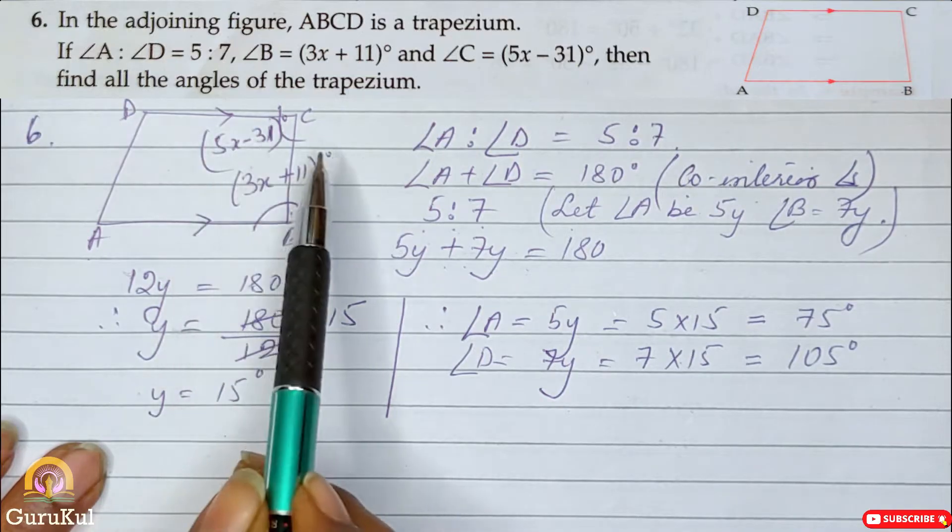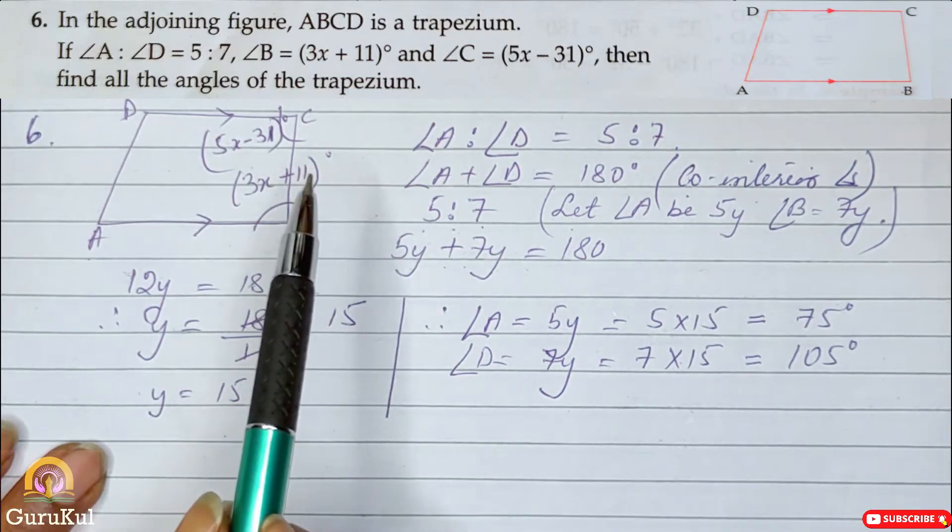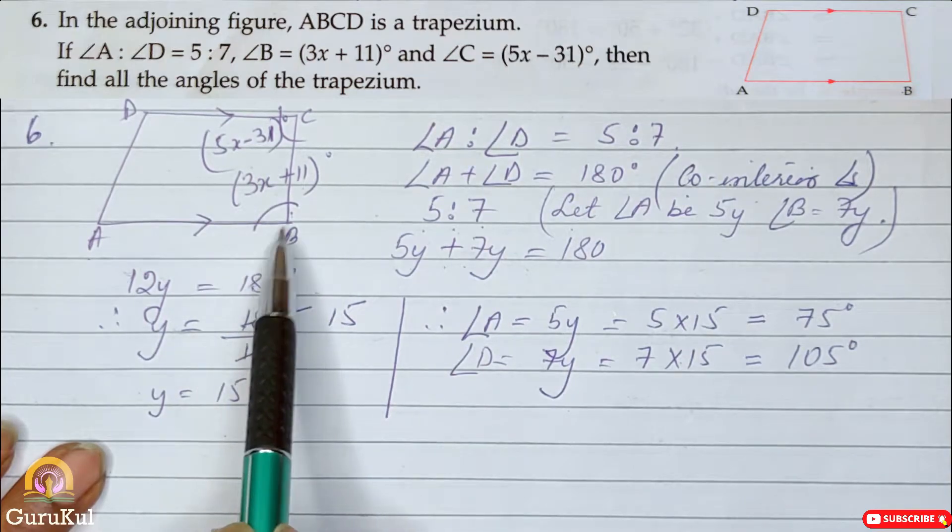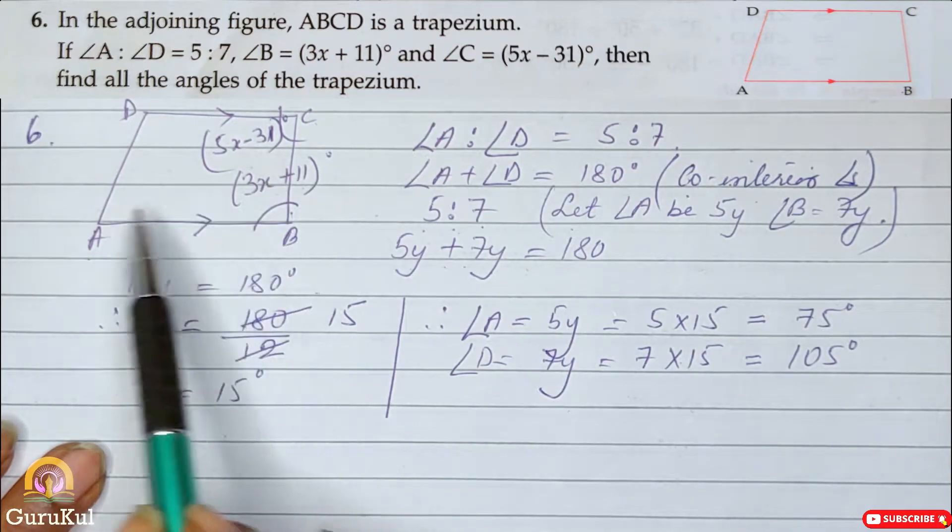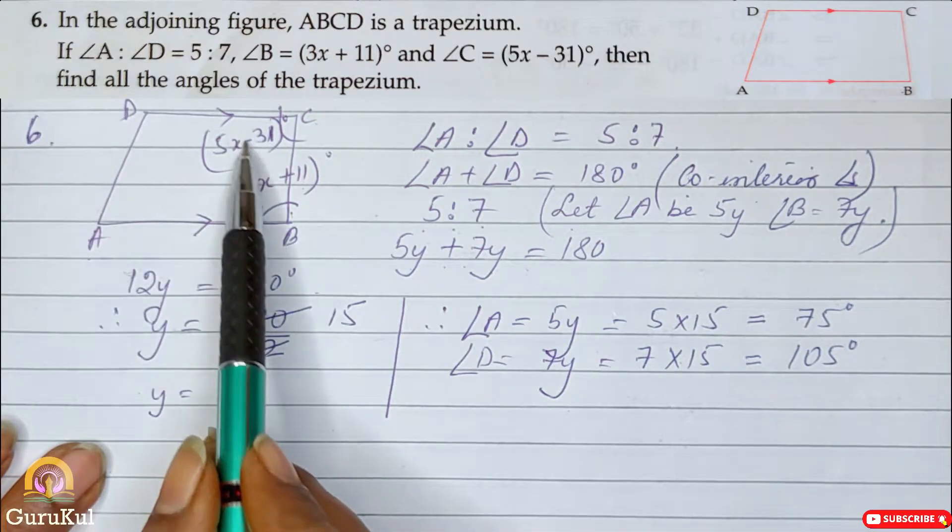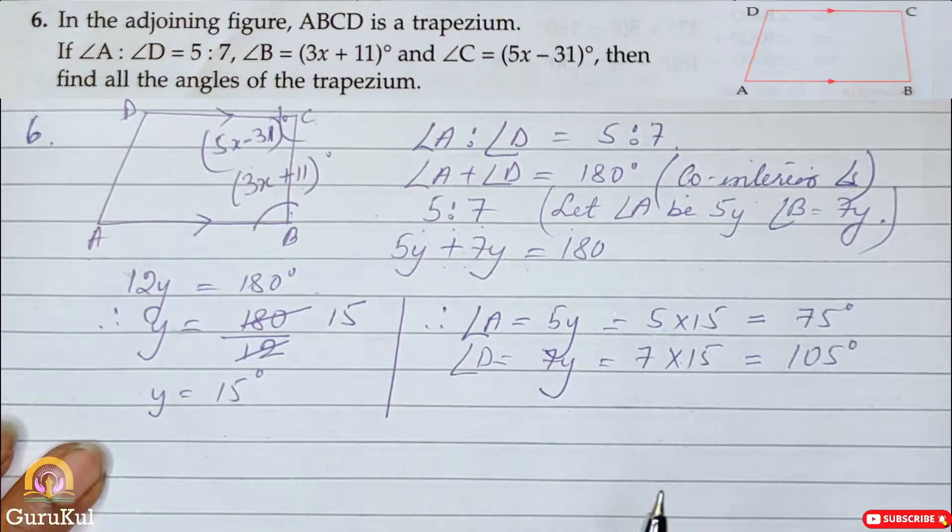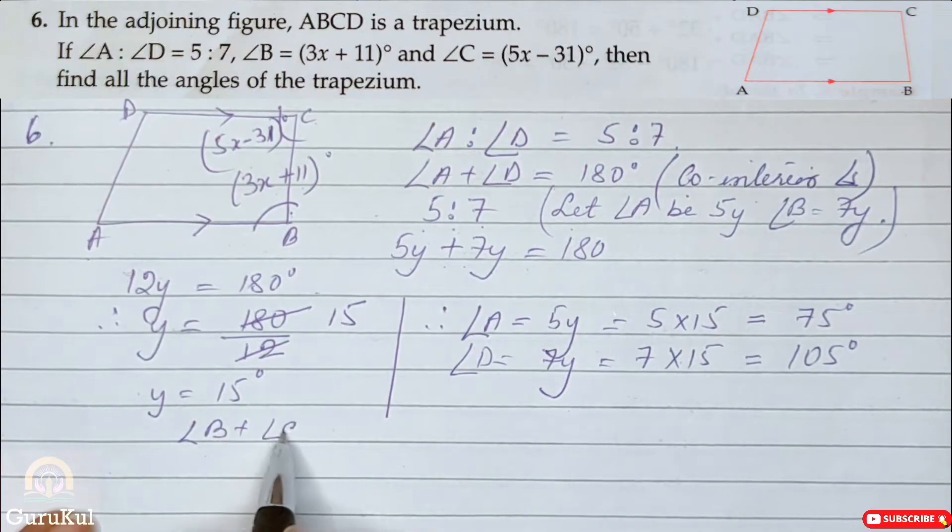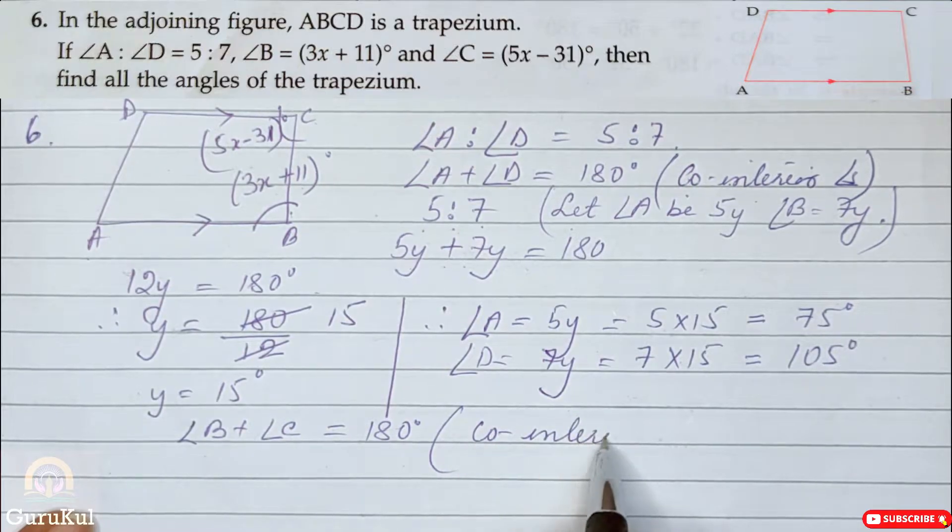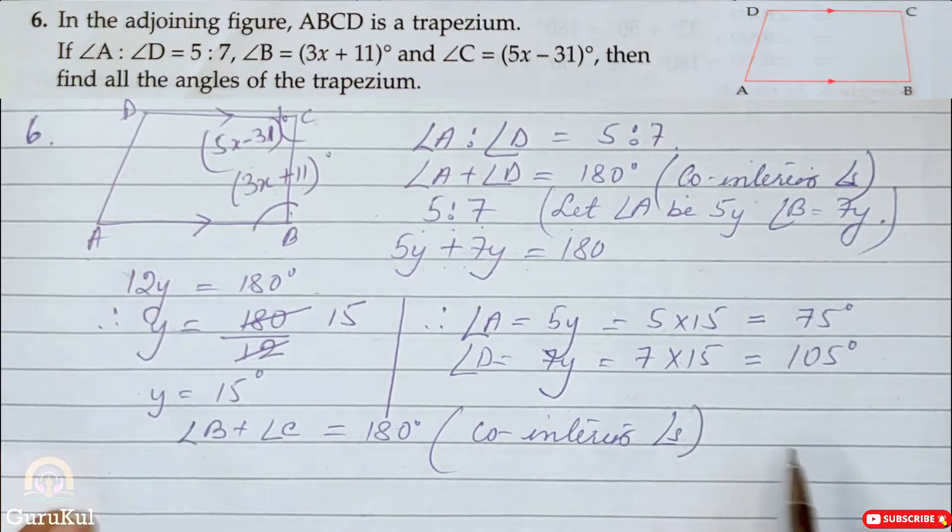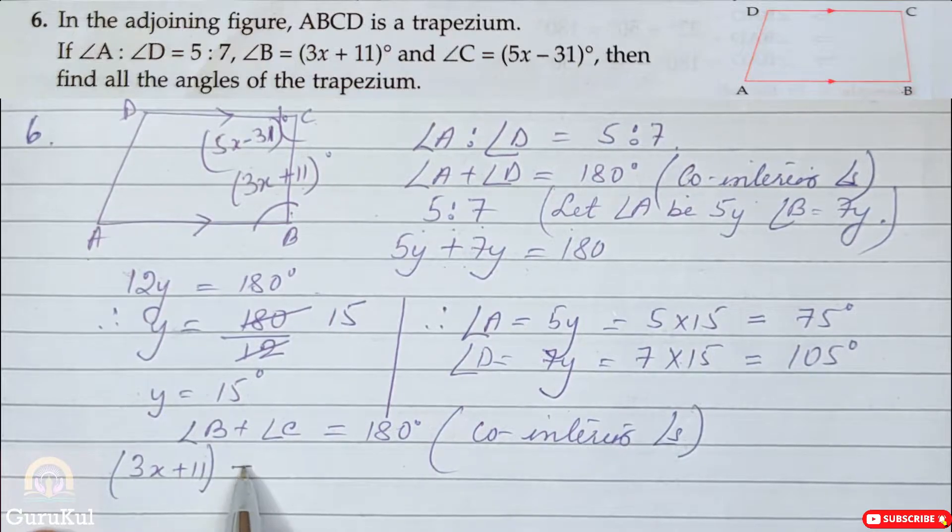Now we are going to evaluate angle B as well as angle C. Again, angle B and angle C are co-interior. Reason why? I have just explained. So we will add them to each other and it should always come to 180 degree. So let us begin. Angle B plus angle C is equal to 180 degree. Reason is co-interior angles.